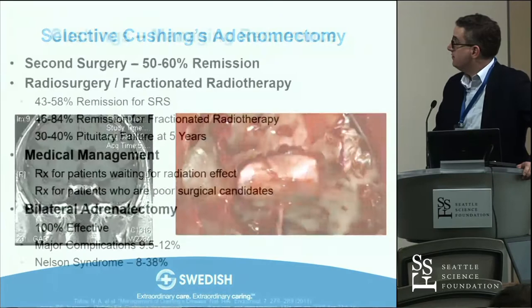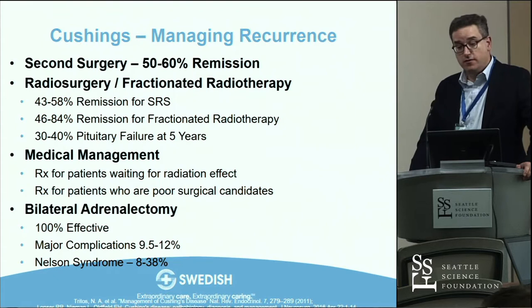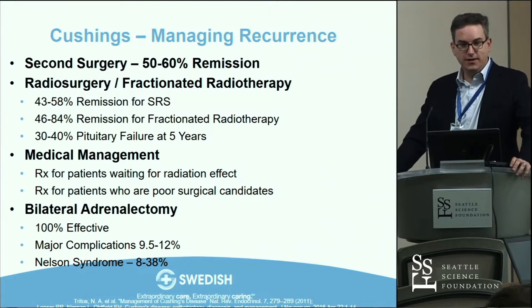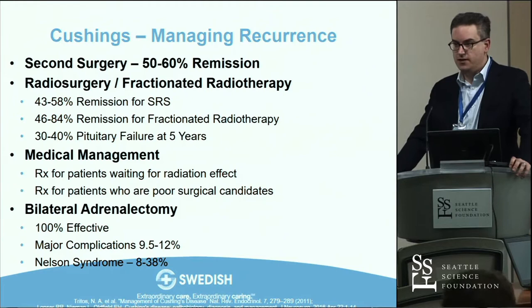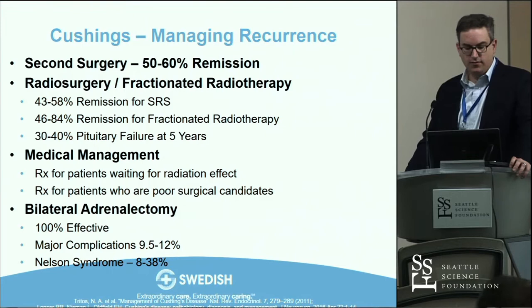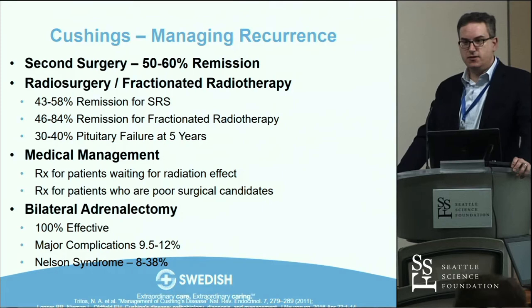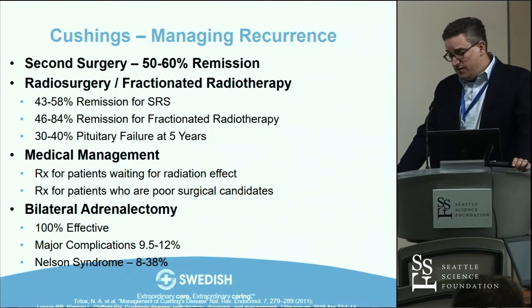Not all patients are cured. Second surgery is still strongly considered — probably about a coin flip in terms of success. Radiosurgery is a very viable alternative, though there is a delay to onset of management. UVA data for SRS shows about 50% remission; fractionated radiotherapy and LINAC therapy averages about the same. The big risk is that it's non-selective — it's just as good at killing normal pituitary tissue as the adenoma. With brittle or malignant Cushing's disease, that may actually be preferable — having the patient on replacement therapy but curing them of excess cortisol.